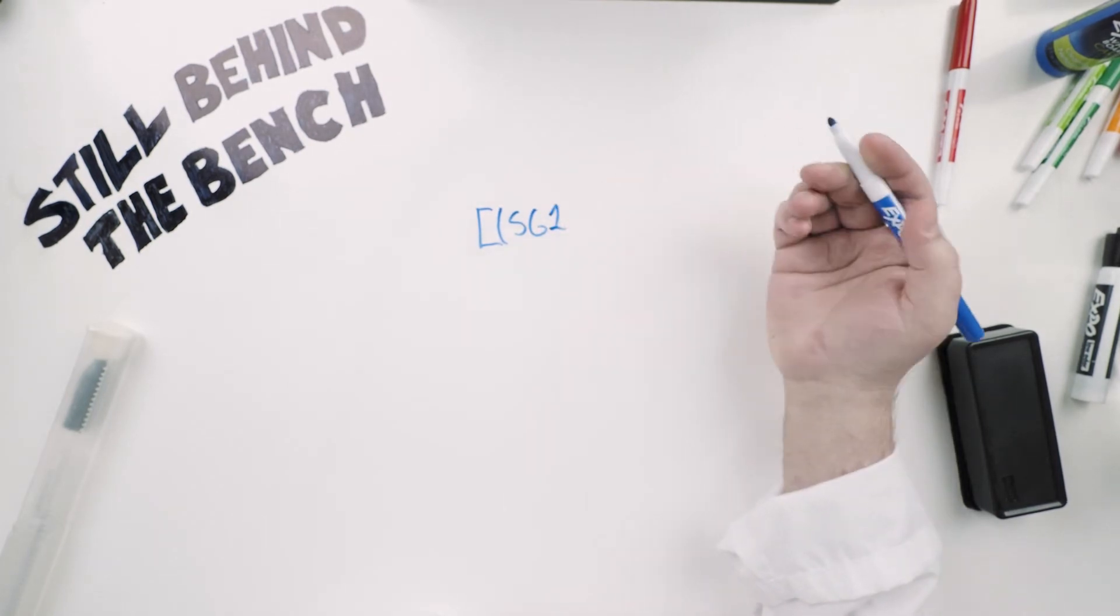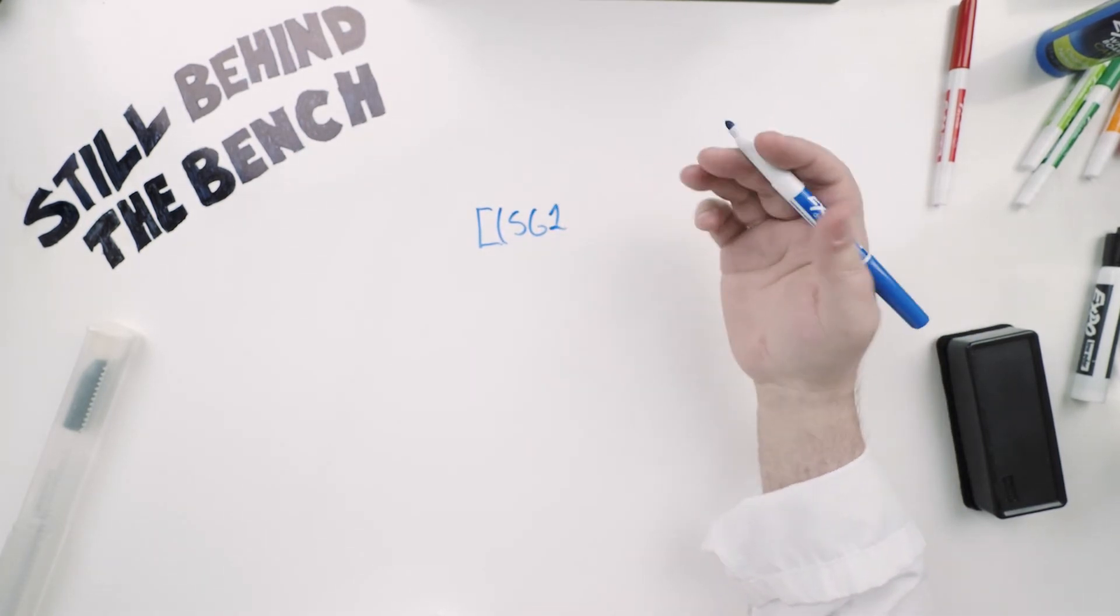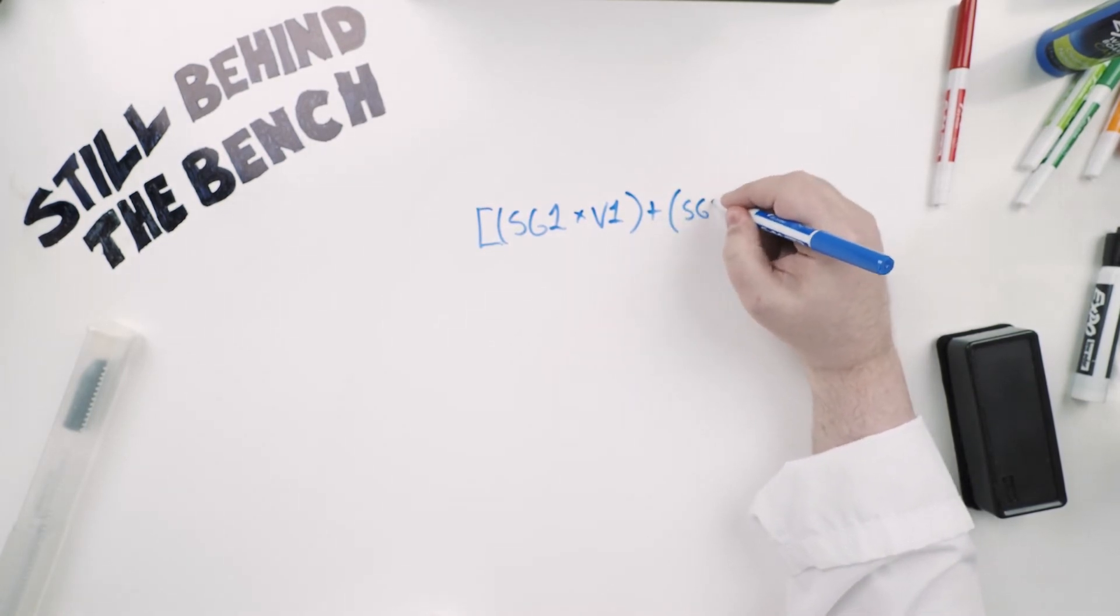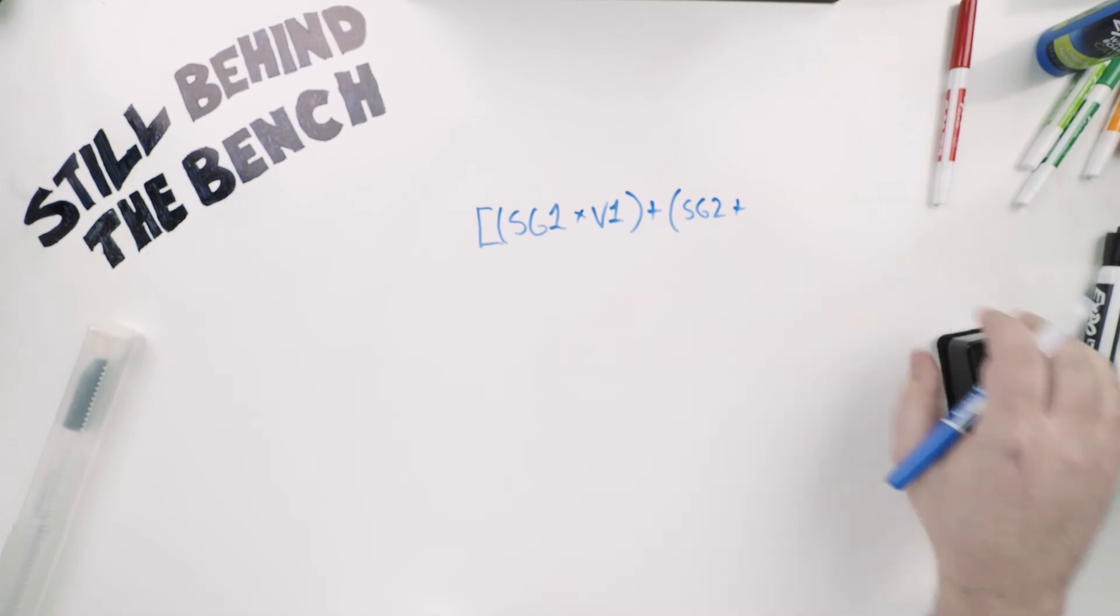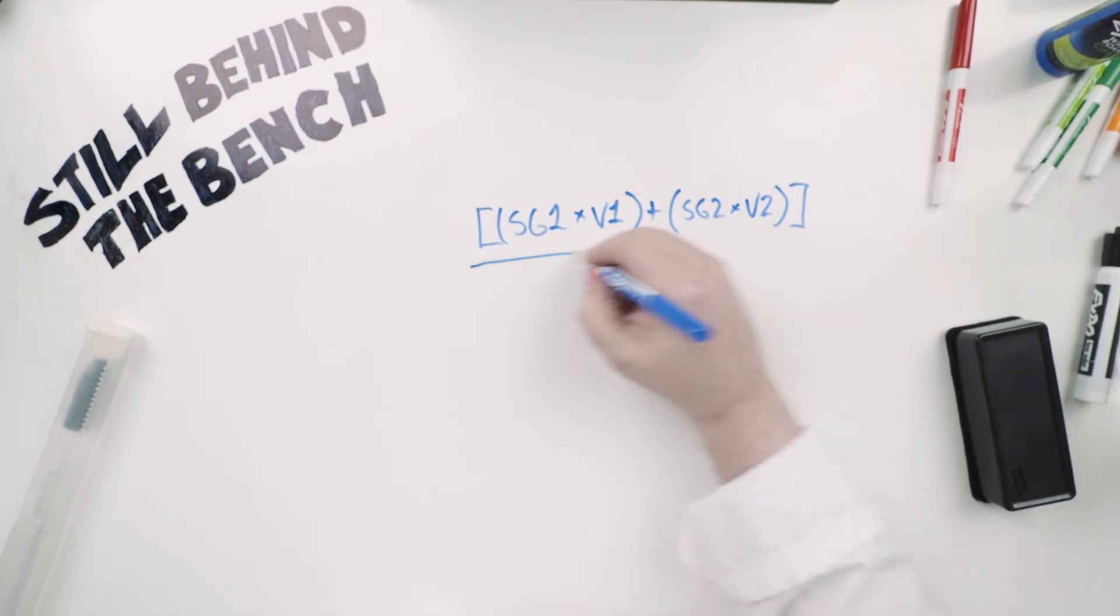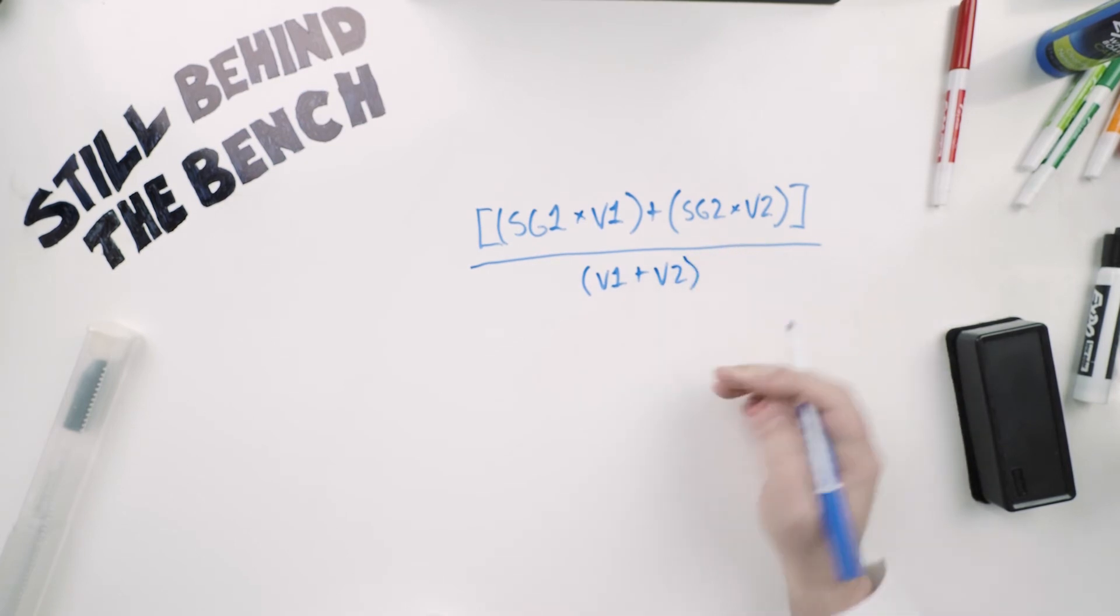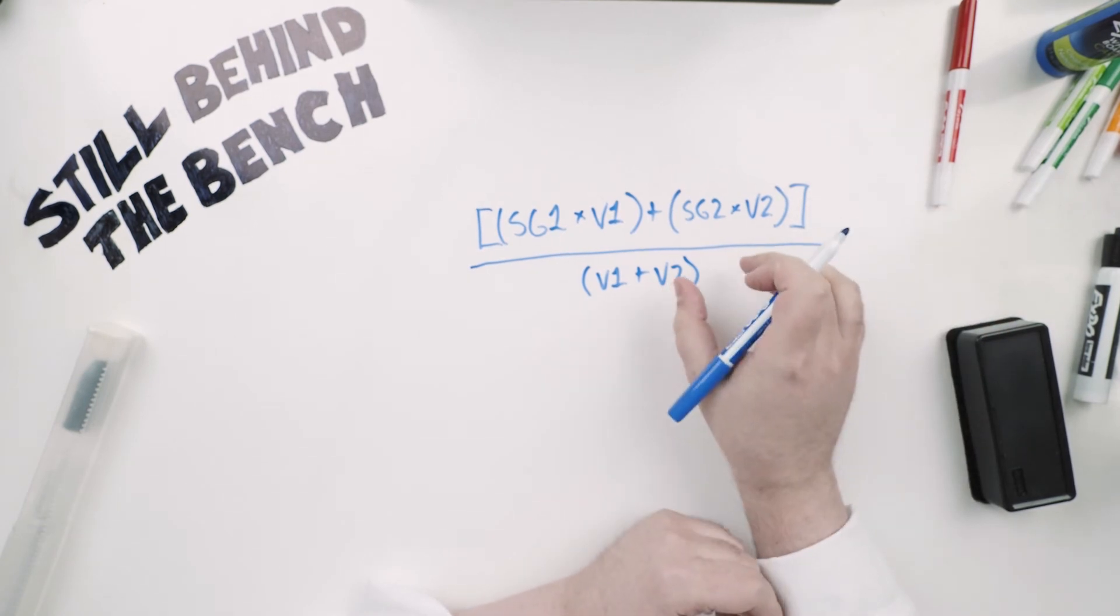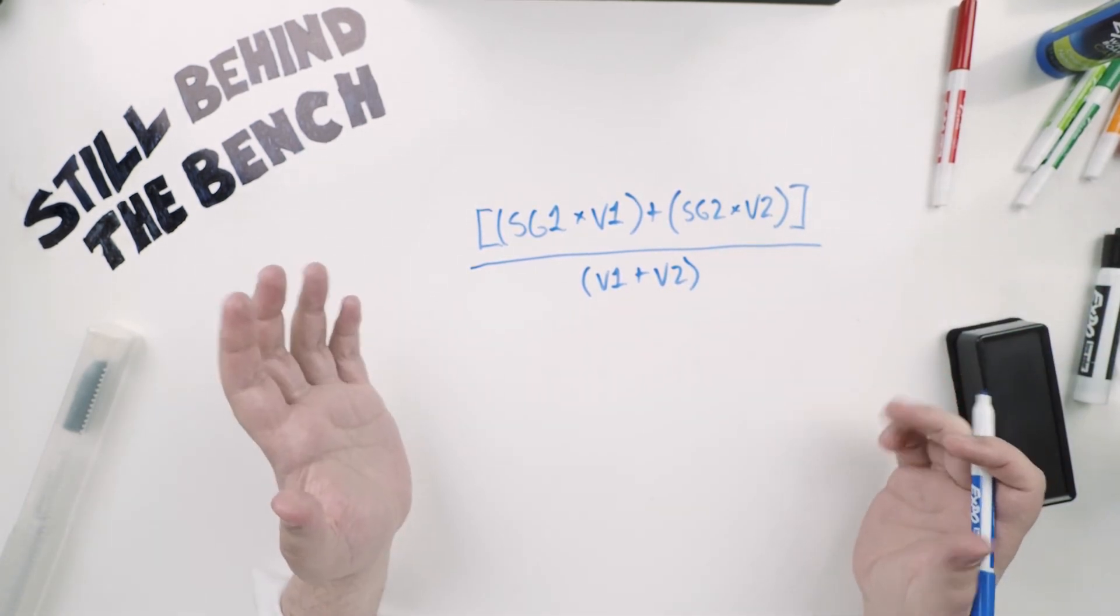Well, the formula you want to use is the following. Specific gravity of the first liquid times the volume of that first liquid plus specific gravity of the second liquid times the volume of that second liquid all divided by the first volume plus the second volume. Now if you have more liquids you can just add SG3 times V3 and then include V3 here and just keep going. So let's use an example.